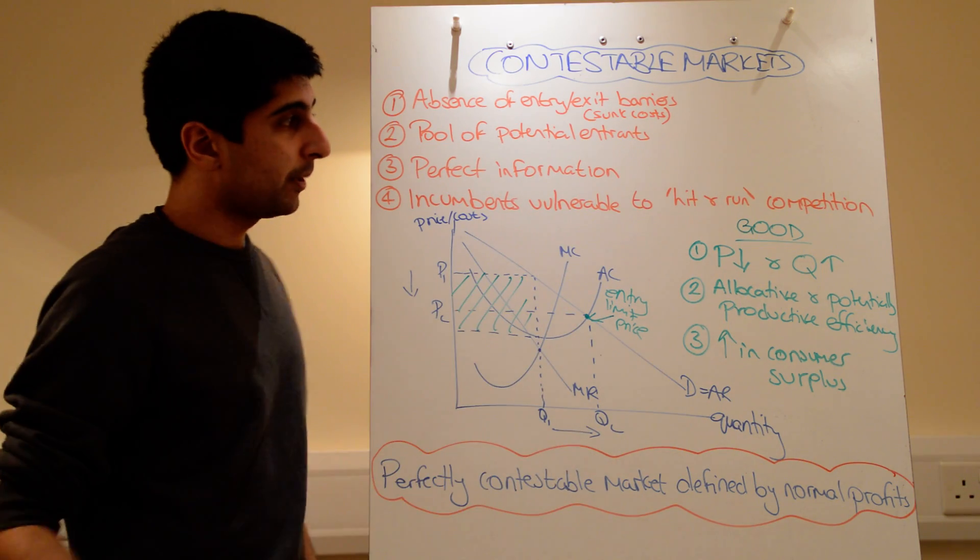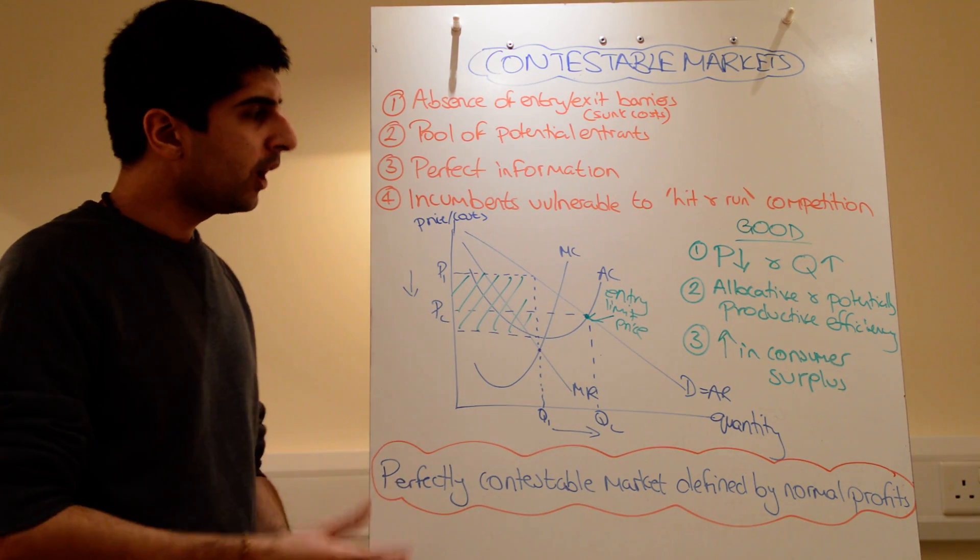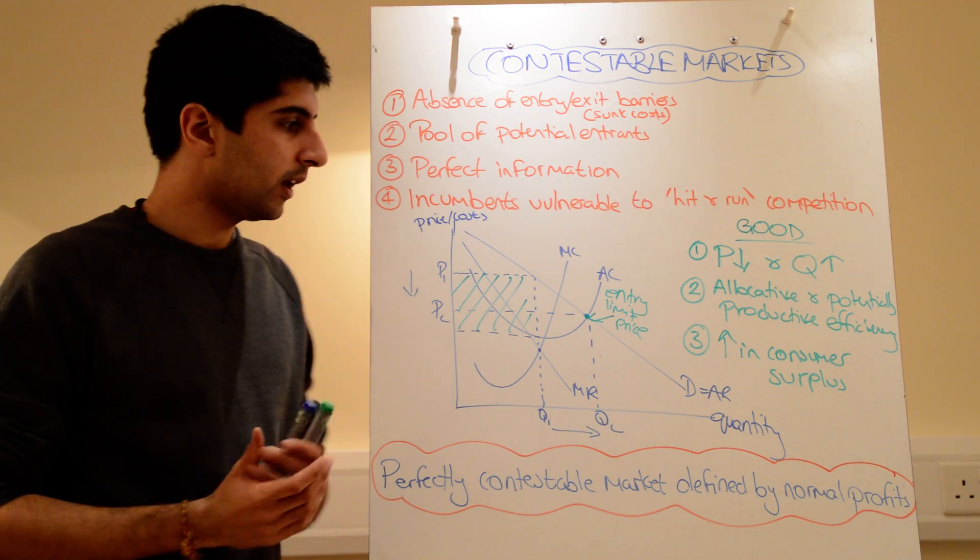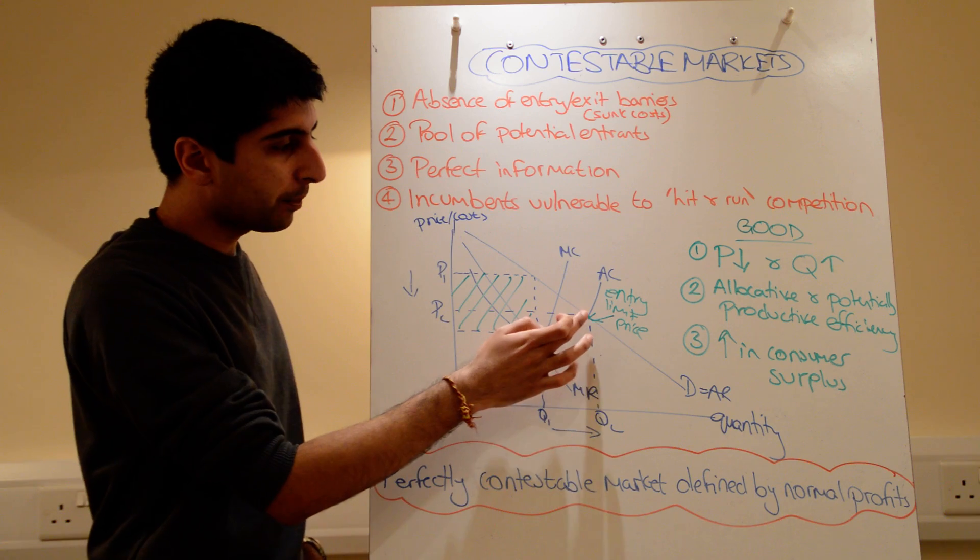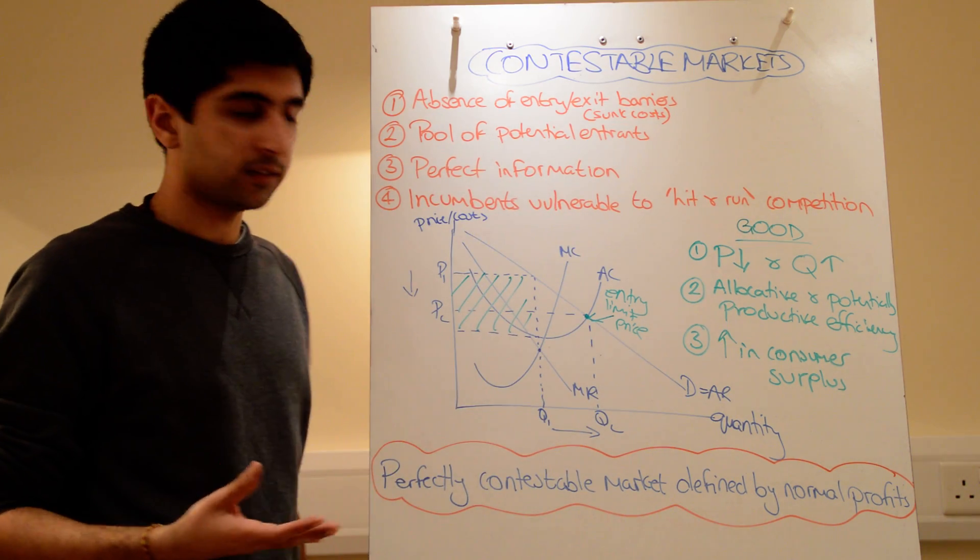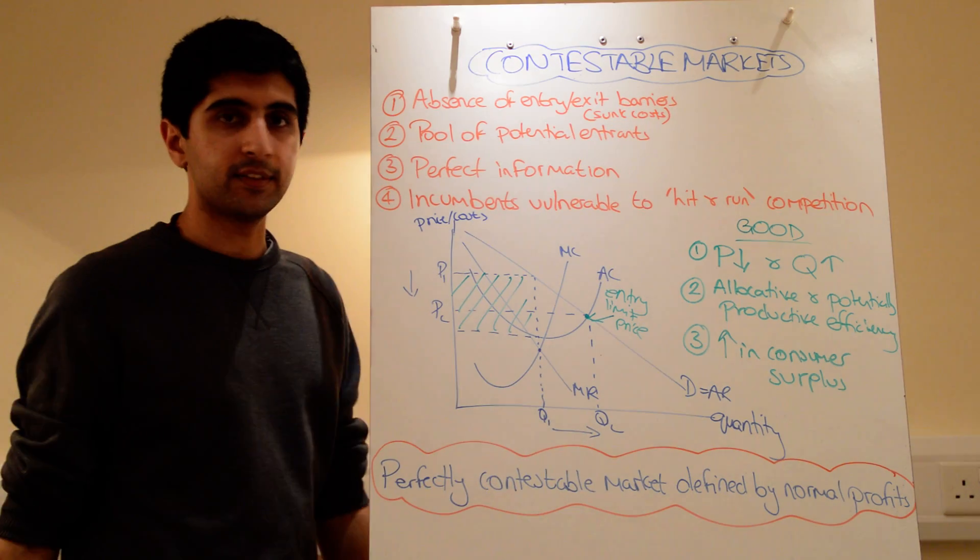Normal profits don't provide the incentive to get in. And that's what's going to happen in a perfectly contestable market. In truth, there aren't really any perfectly contestable markets out there, but there can be some very contestable ones. So there will be downward pressure, maybe not to this perfect point, but there will still be downward pressure on price. And that will increase quantity at the same time too.